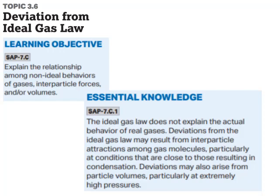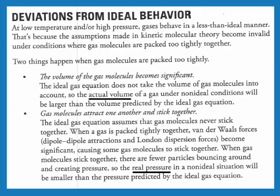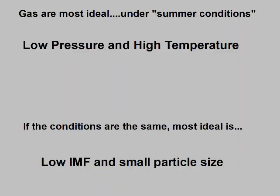Deviations from ideal gas behavior: gases are most ideal under low pressures and high temperatures. If conditions are the same, the most ideal gas is the one with the lowest intermolecular forces—because it wouldn't form attractions as easily—and the smaller particle size, because the volume of the gas particles more closely approaches zero.